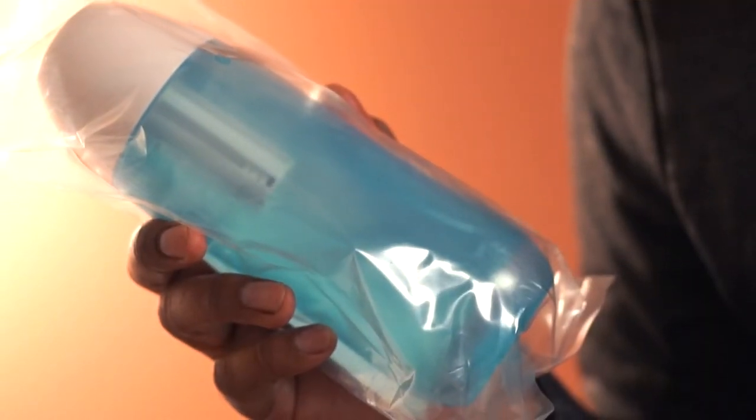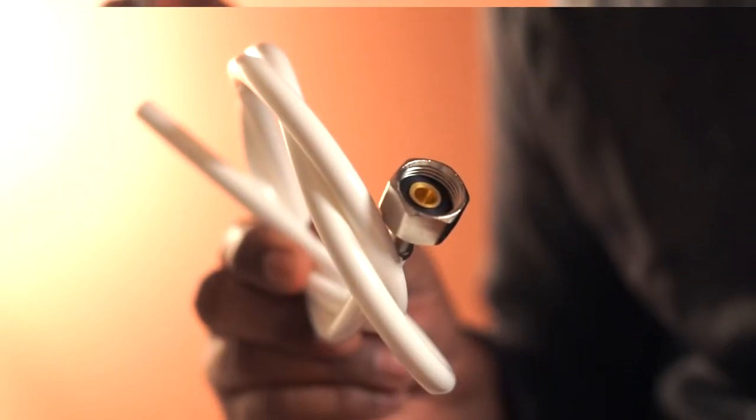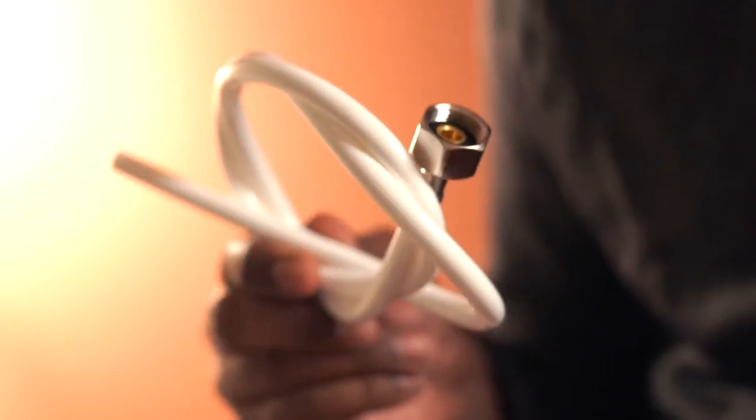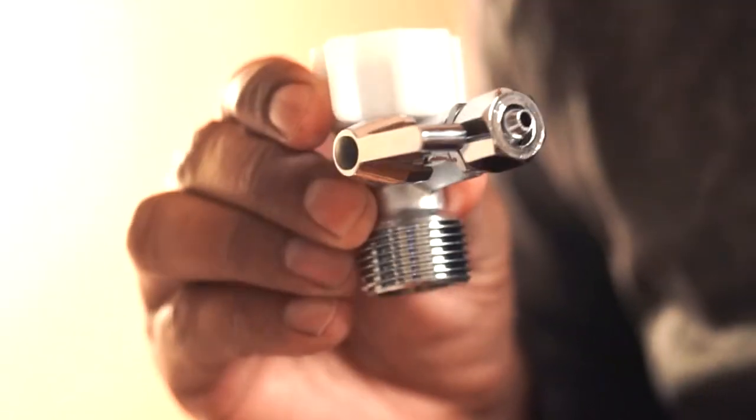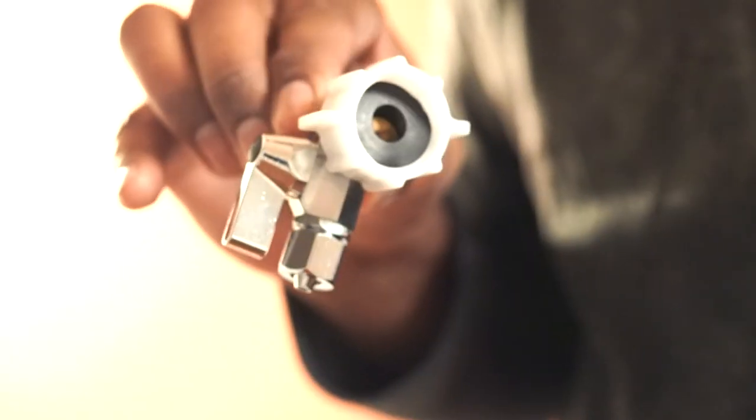The box also includes this portable travel bidet. Comes with the water hose. This one connects to the bidet. Here is the T-Adapter. You can switch this on and off.